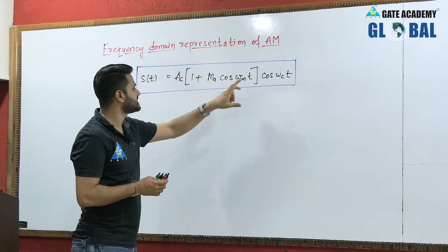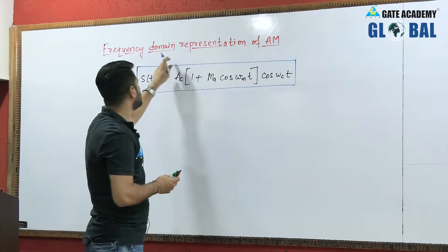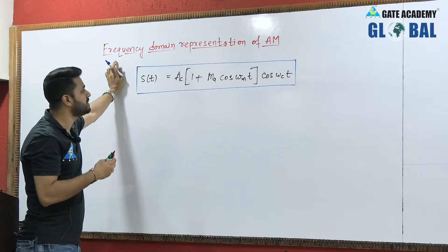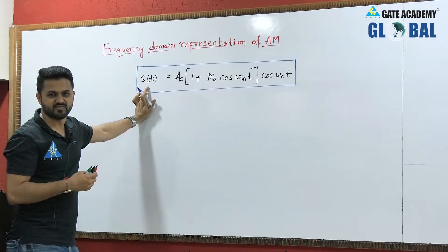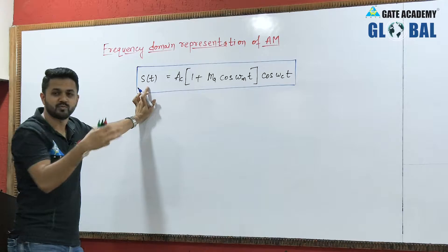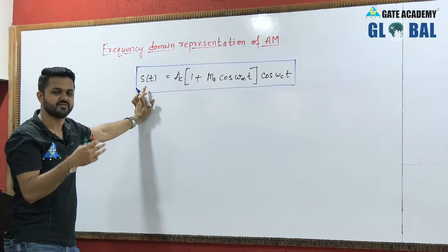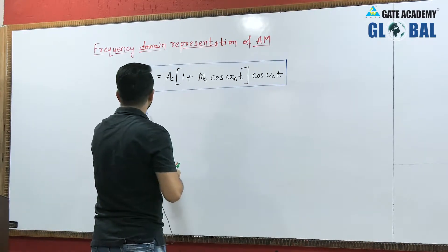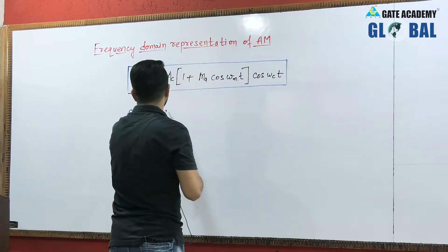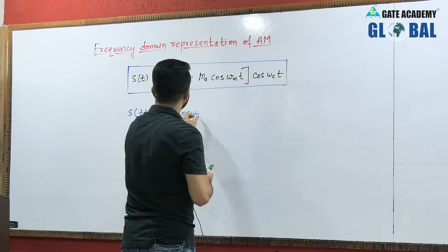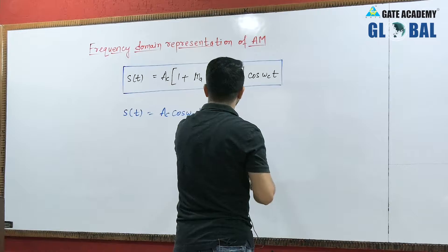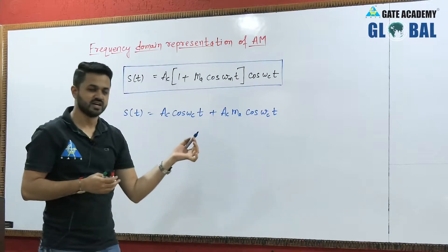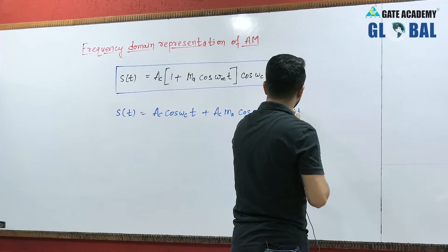We have AC(1 + MA cos ωM t) cos ωC t, and to calculate the bandwidth requirement or to represent the frequency domain of AM, we have to take the Fourier transform of this expression because it is in the time domain. For that, we will expand this equation and get S(t) equal to AC cos ωC t plus ACMA cos ωC t cos ωM t.